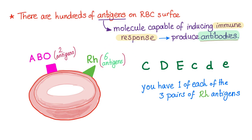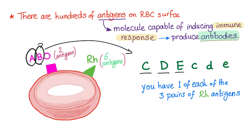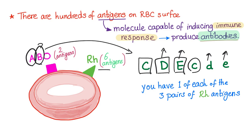The RH system has six different antigens. After talking about the ABO system with A antigen and B antigen, the next system continues with C, D, and E. In the RH system, we have capital C and small c, capital D and lowercase d, and capital E and small e — three pairs. You will never have all six; you will only have one of each of the three pairs. So if you have capital C, you will never have small c at the same time. Same with D or E.